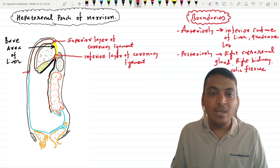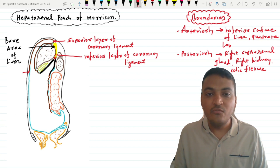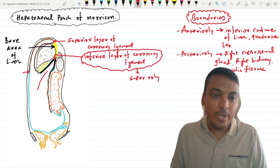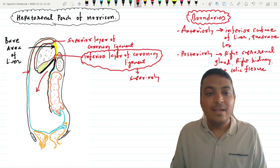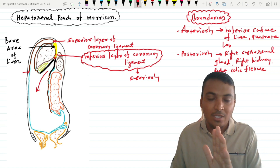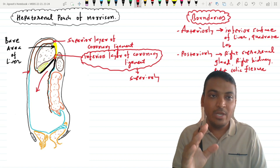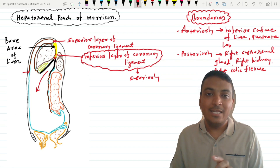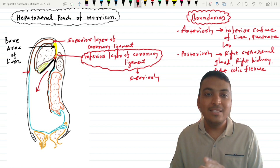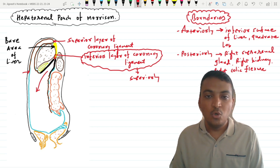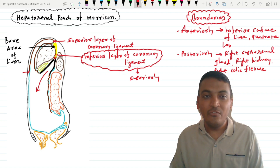Superiorly, this hepatorenal pouch is bounded by the inferior layer of the coronary ligament. Inferiorly, this pouch is open into the peritoneal cavity and communicates with the right pericolic gutter as well as with the pelvic peritoneum. Just to the left of this hepatorenal pouch, we have the epiploic foramen, and through this epiploic foramen, the hepatorenal pouch communicates with the lesser sac, or what we call the omental bursa.